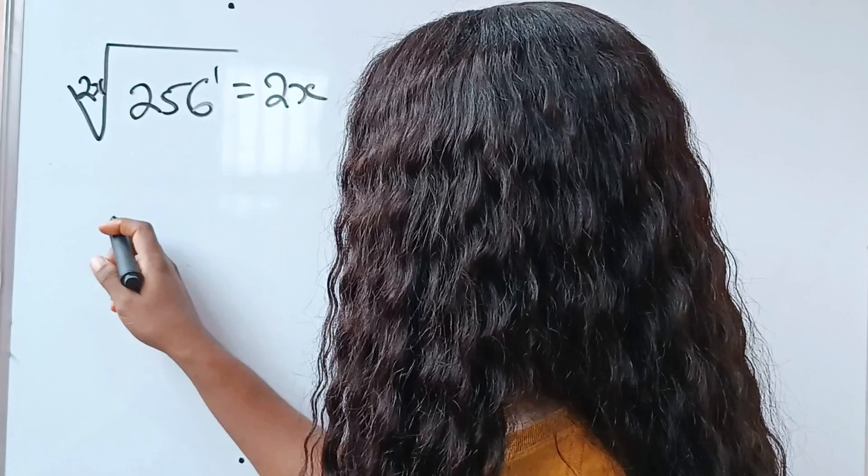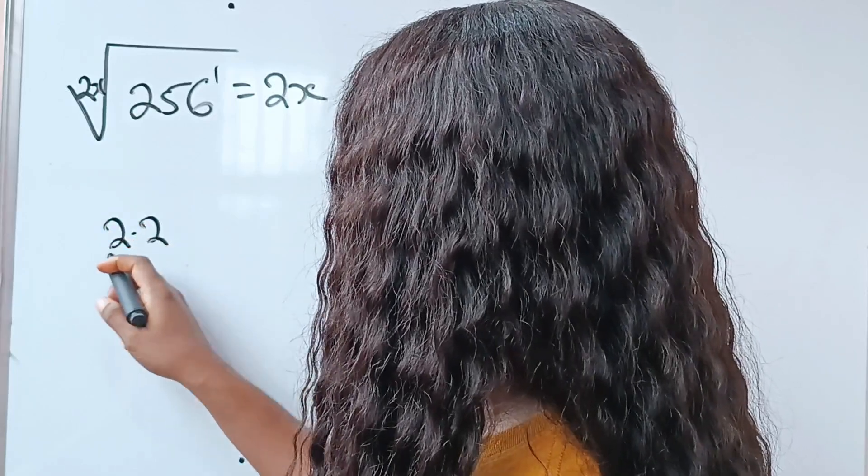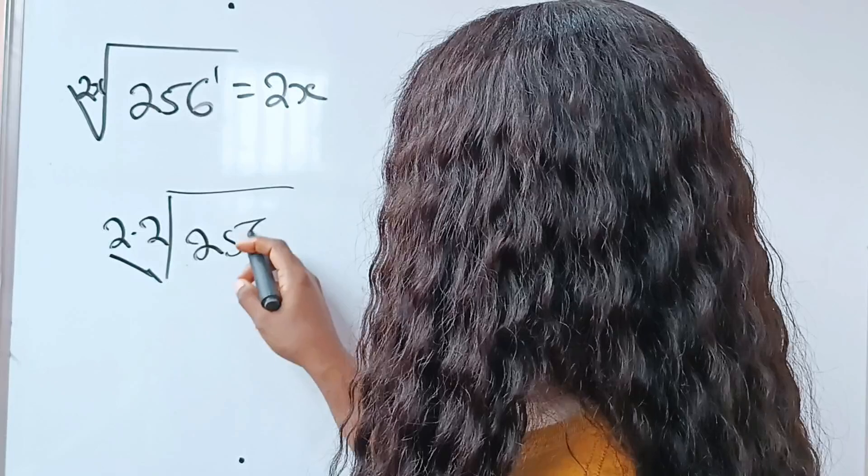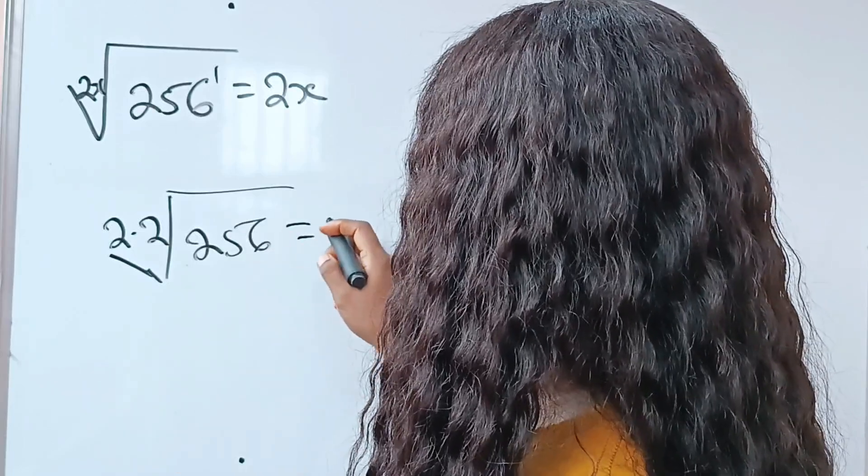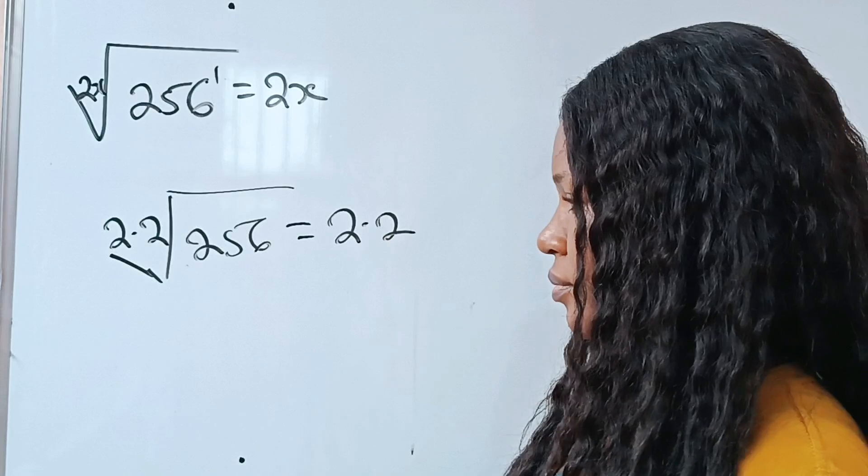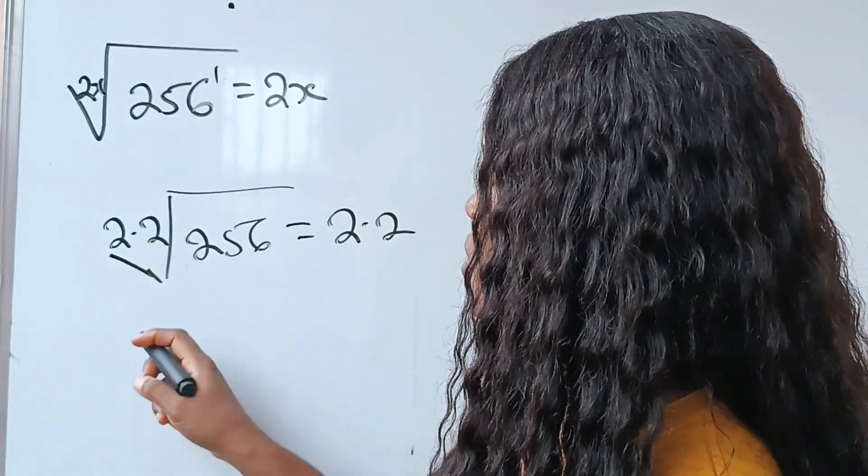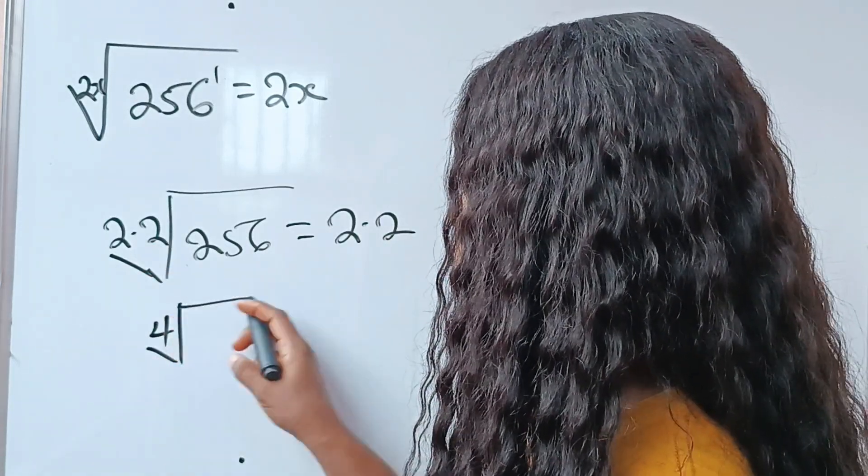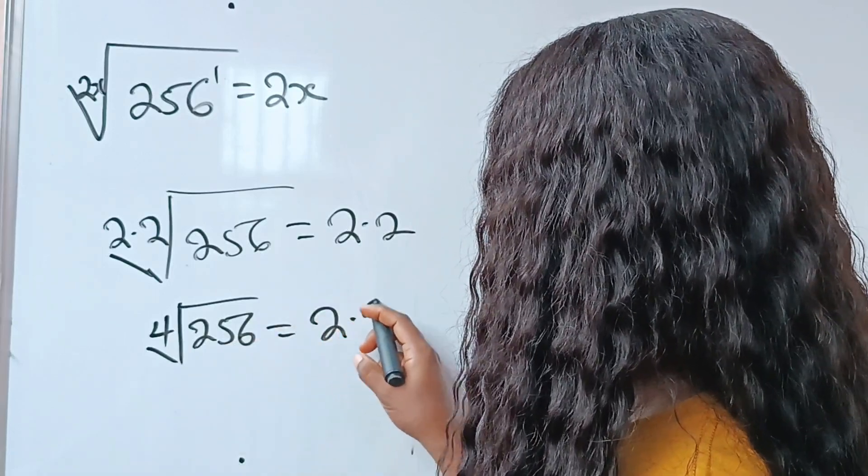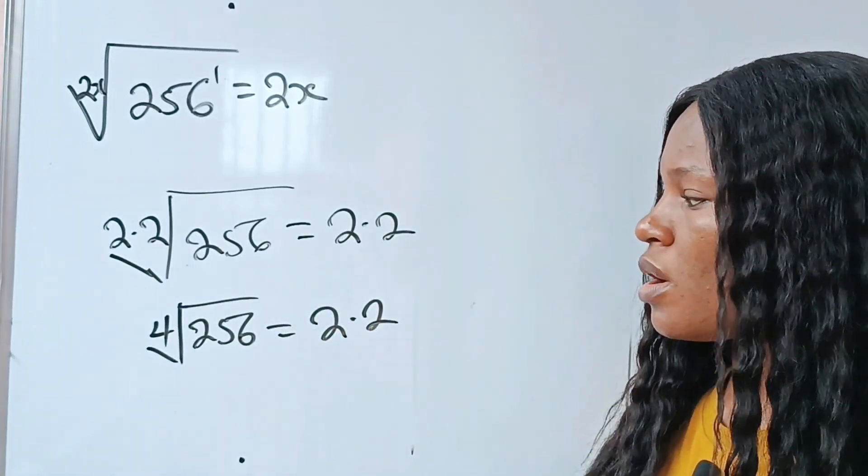Now, this is it. We have 2 multiplied by 2, since our x is 2. 256 is equal to 2 multiplied by 2. So 2 times 2 will give us 4. We have 256 is equal to 2 multiplied by 2.